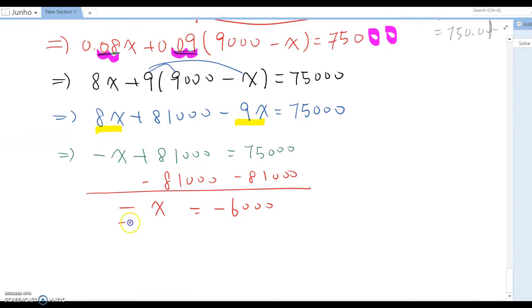So divide by negative 1, so X becomes 6,000, which means Y becomes 3,000.